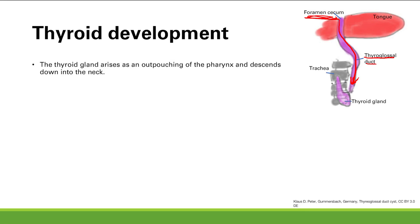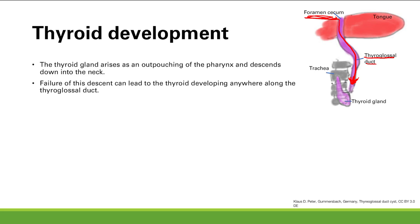It descends down the neck until it normally resides above the trachea. However, you can have failure of this descent, and what's going to happen is the thyroid can develop anywhere along the thyroglossal duct. If it stops descending partway, you get thyroid tissue there. Or it can just not descend at all, giving you thyroid tissue around the tongue — that's called a lingual thyroid.